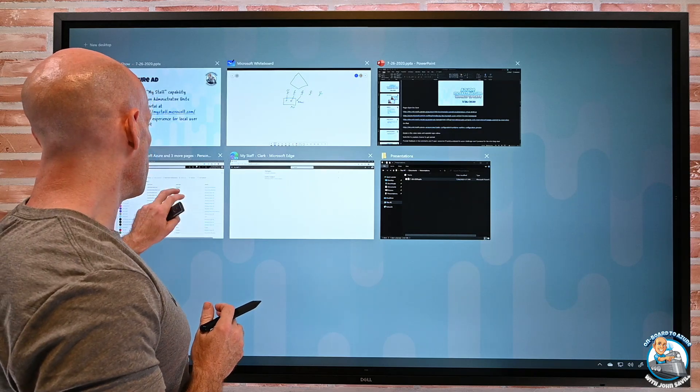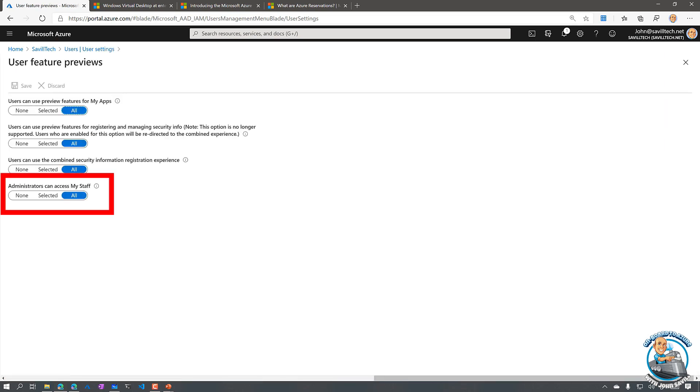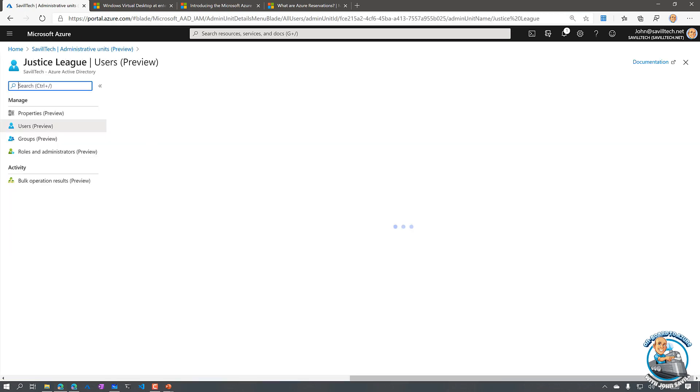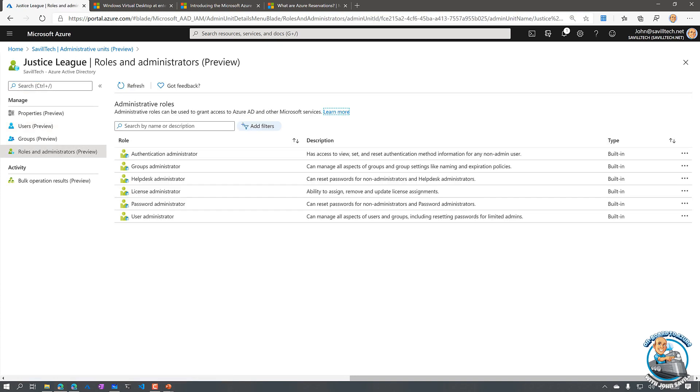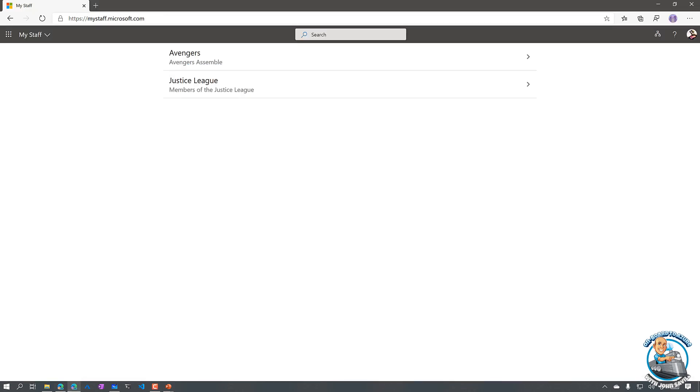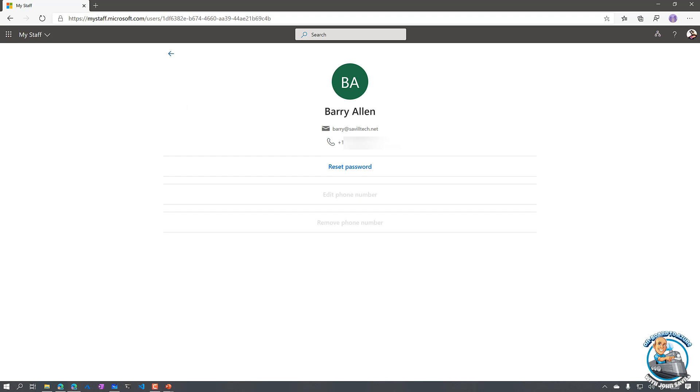So I can actually go to mystaff.microsoft.com. And as maybe I'm a branch officer, I'm an admin for a local team, it gives me a much simplified interface to actually go and manage my people, go and reset their passwords. So it gives me that simpler experience. So if I actually super quickly jump over, from here I can go into user settings, manage user feature preview settings, and then I can turn on that administrators can access my staff for none, selected or all.